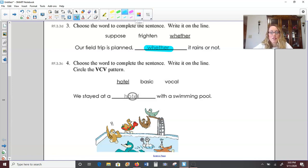Number four, choose the word to complete the sentence, and then we're going to circle that vowel, consonant, vowel pattern. Hotel, basic, or vocal. We stayed at a blank with a swimming pool. Hotel is the best choice there, and the first vowel in the word hotel is the O. So we're going to circle the O-T-E. Vowel, consonant, vowel.